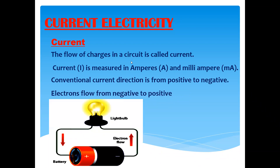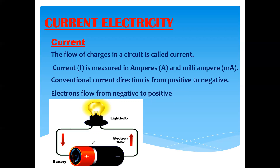The conventional current flows from positive to negative, while electron flow is in the opposite direction. If we have a cell with a positive terminal on the left and a negative terminal on the right, conventional current flows from positive to negative. In reality, movement is due to electrons, but since electricity laws are based on the assumption that current flows from positive to negative, we always take the direction of current as conventional current.